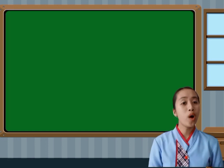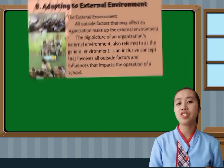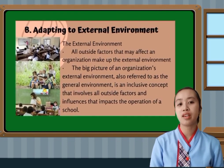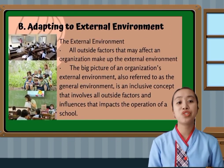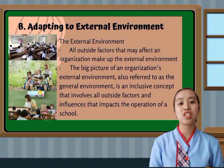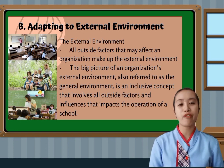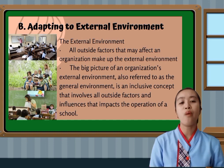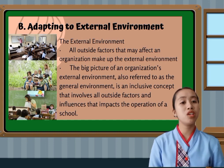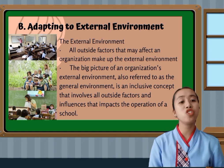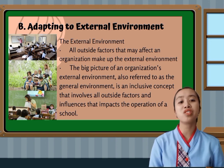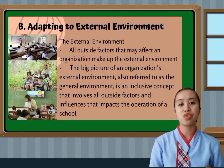So what is the external environment in education? Some examples include social matters such as fights, a student's suicide, personal matters, and poor academic performance. However, political and economic issues such as school board elections and mismanagement of school funds are also included as possible external issues.